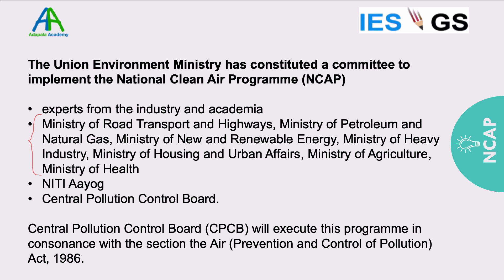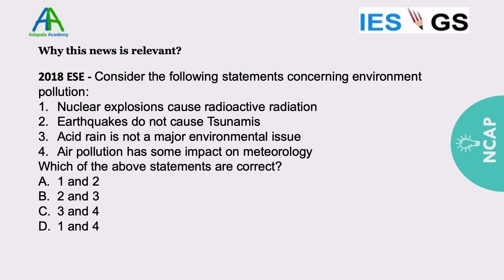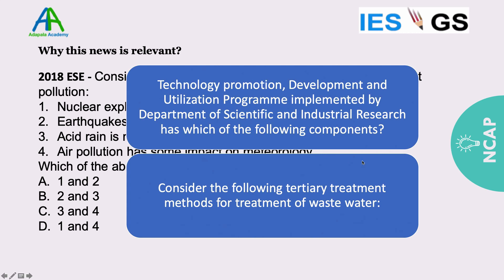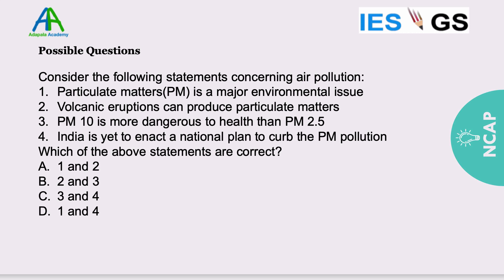According to the Air Prevention and Control of Pollution Act of 1986, CPCB is the authority given power to execute programs related to pollution. Examining previous year questions, there have been questions regarding environment pollution including nuclear explosions, earthquakes, and air pollution. There can be direct questions on particulate matter pollution. Questions on water pollution treatment appeared in 2017 ESE, air pollution with a jury scrubber in 2019 ESE, and questions on policies of different departments also appear.